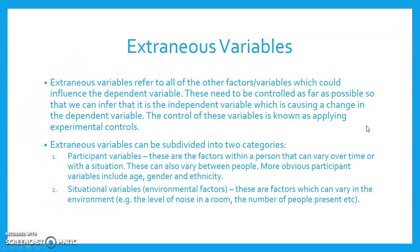Extraneous variables refer to all the other factors and variables which could influence the dependent variable. These need to be controlled as far as possible so that we can infer that it is the independent variable which is causing a change in the dependent variable. The control of these variables is known as applying experimental controls.